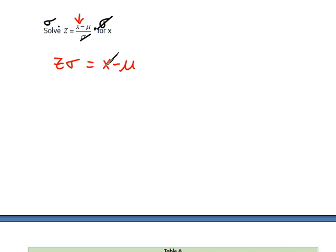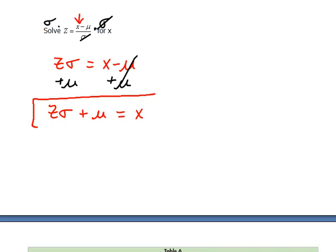Now we still need to have x alone. We're not finished yet. Right now it's not alone because we are subtracting mu from it. Well the opposite of subtracting mu would be to add mu. So let's add mu to both sides, and now on the left we have z times sigma plus mu equals, and on the right hand side we're left with x. We're done because x is all by itself. We've solved for that. It doesn't matter that it looks funny. You just follow your rules.